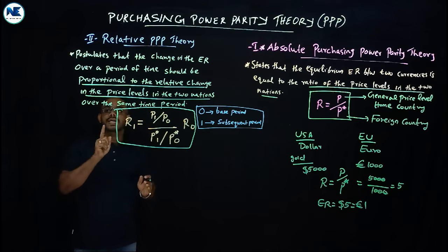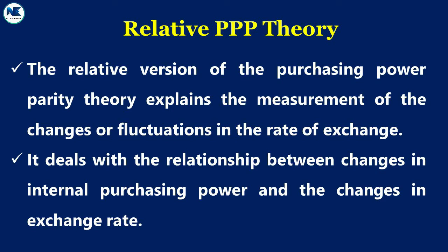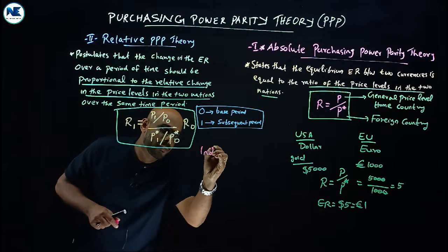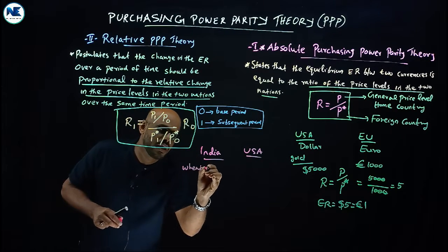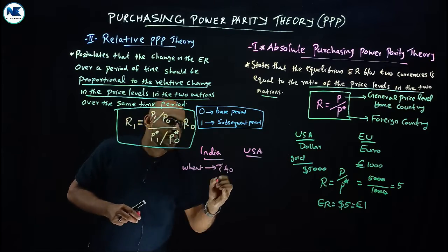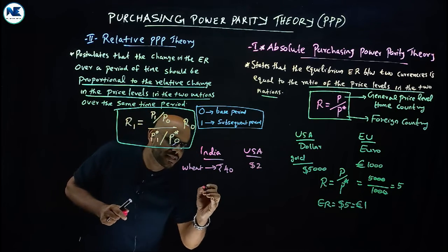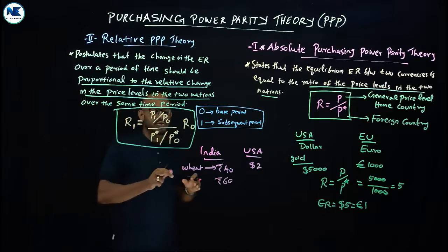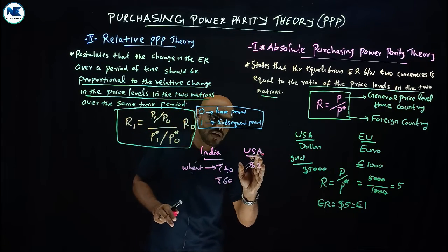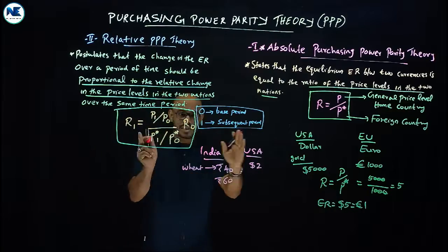For example, consider India and USA with the product wheat. The price of wheat in India is Rs 40 and in the USA it is $2. Now the price level in India increases from Rs 40 to Rs 60. There is no change in the price level of wheat in the USA, so P1* / P0* equals 1 — no change in price level in the foreign nation.